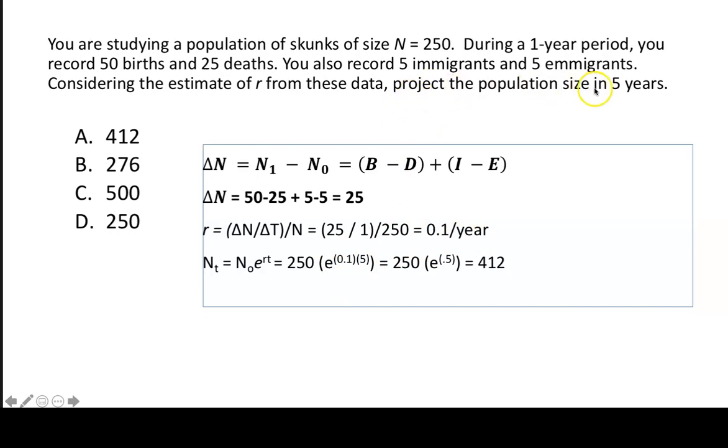And we're asked to project the population size in 5 years. So here T is 5. And when we do that, we get 250 times the natural logarithm to the power of 0.5, which actually ends up being 412. So therefore the population size of the skunks would be 412 in 5 years. And so the answer here would be A.